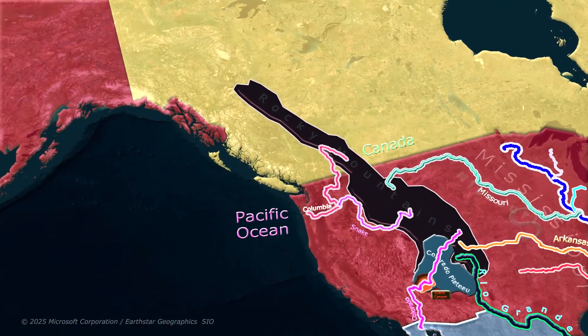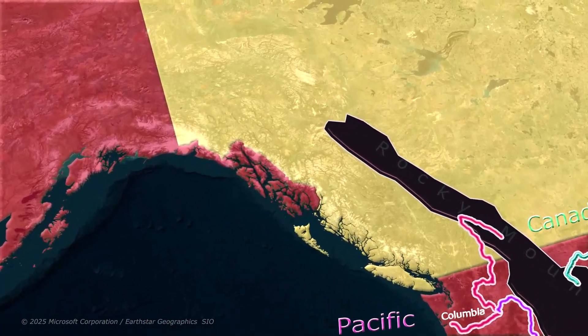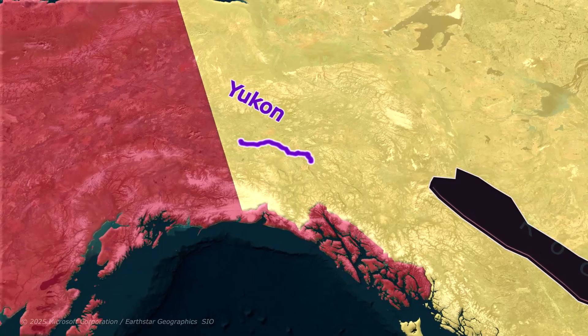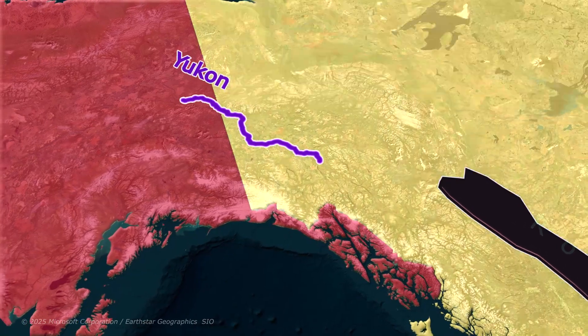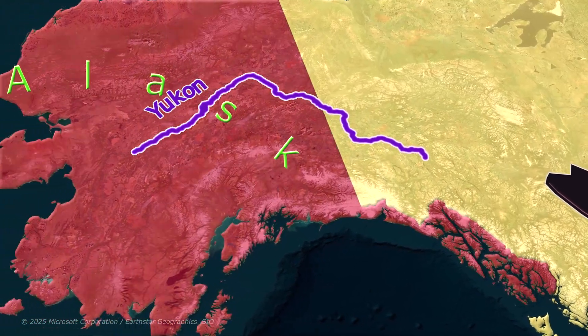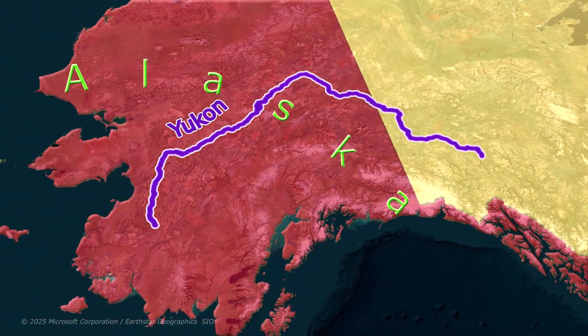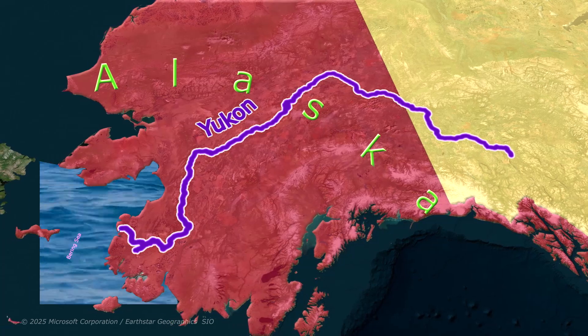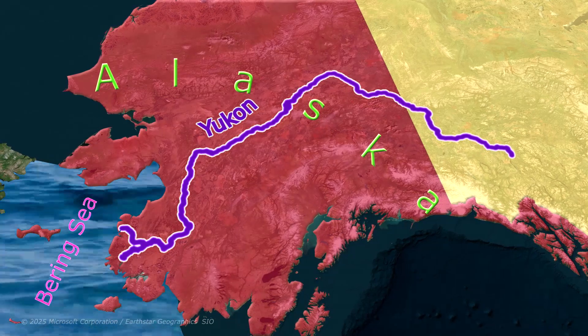Now let us study the Yukon River, which originates in Canada, flows across Alaska in the United States, and finally empties into the Bering Sea.